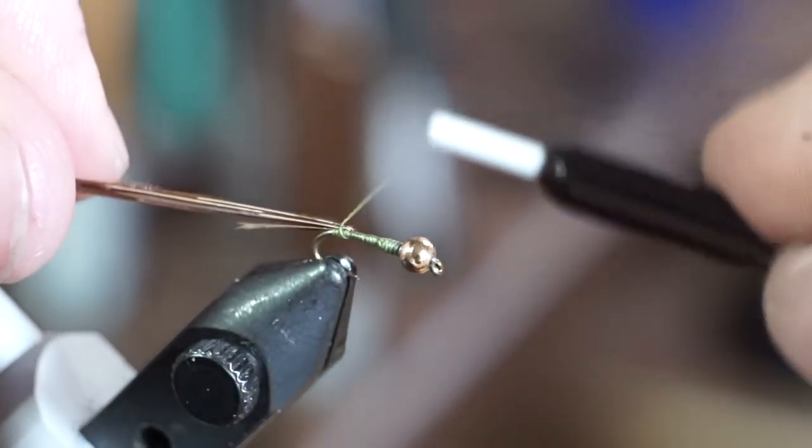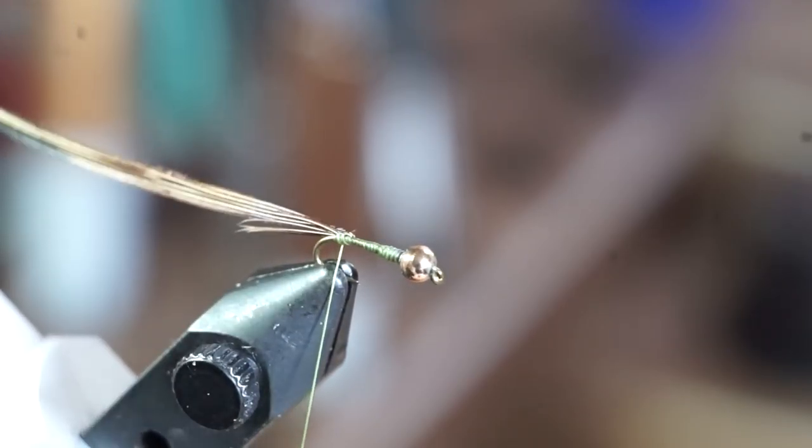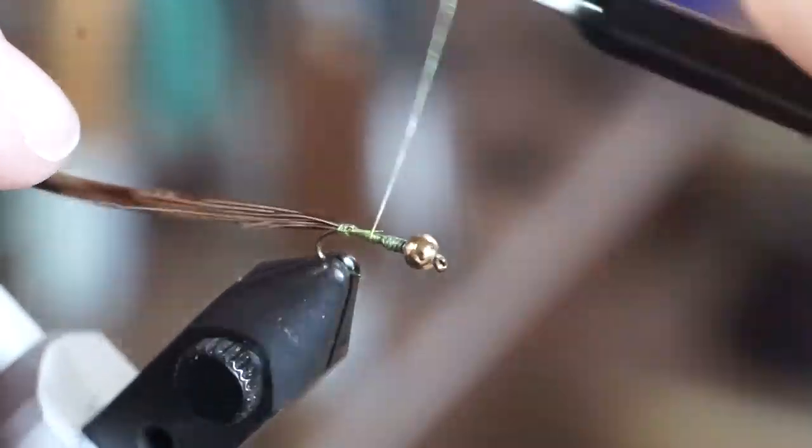Then pull back the pheasant tail and tie it in at the base of the tail. After making a few tight wraps, attach some small sized gold wire and bring your thread up to just shy of the bead.